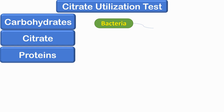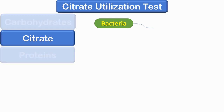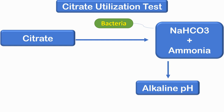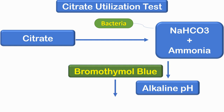The next test is the citrate utilization test. Some bacteria can obtain energy by using citrate as the sole source of carbon, rather than by fermentation of carbohydrates. This characteristic is important in identifying many members of the family Enterobacteriaceae. The medium must be devoid of protein and carbohydrates as a carbon source. Citrate utilization is detected by the production of sodium bicarbonate and ammonia, which results in an alkaline pH of the medium.